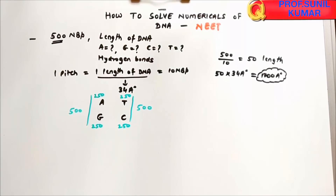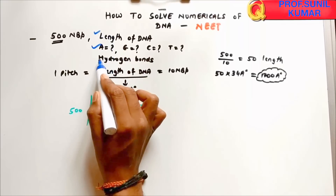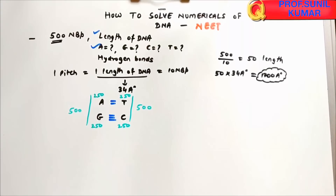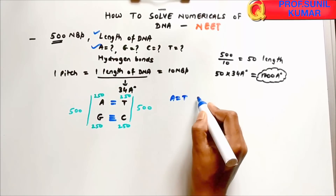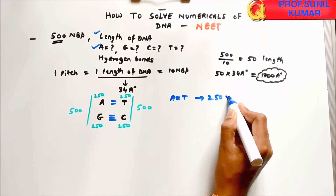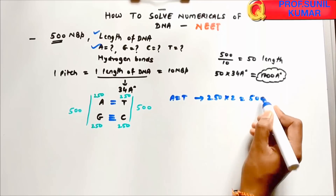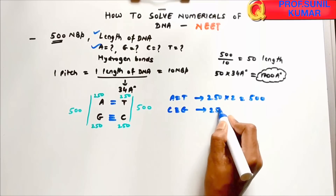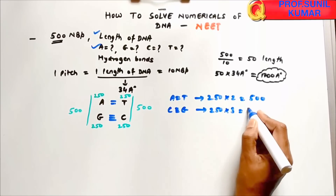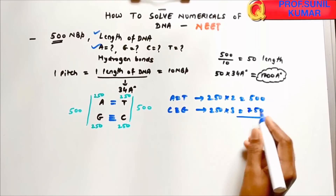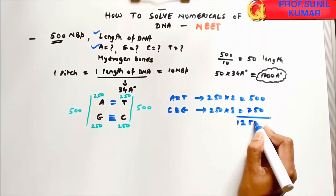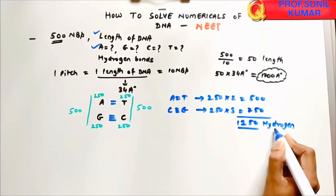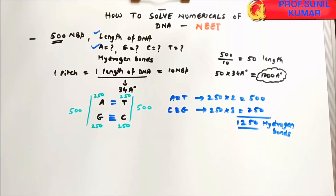For hydrogen bonds: A pairs with T via double bonds — 250 × 2 = 500 hydrogen bonds. C pairs with G via triple bonds — 250 × 3 = 750 hydrogen bonds. Total hydrogen bonds = 500 + 750 = 1,250.